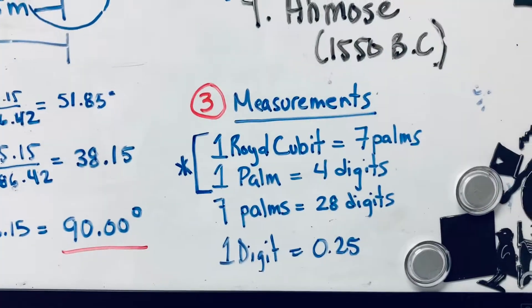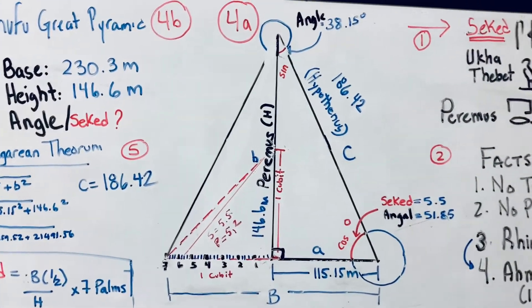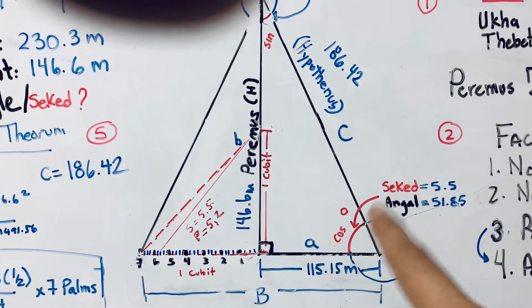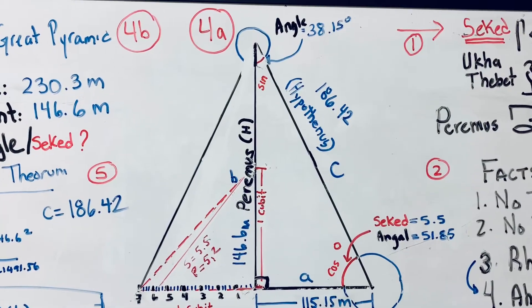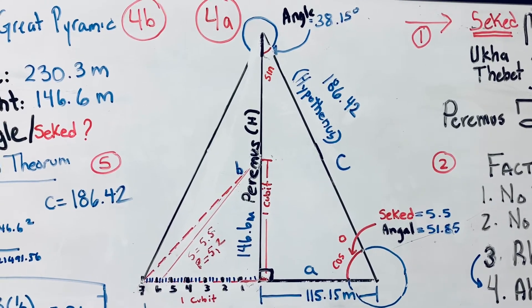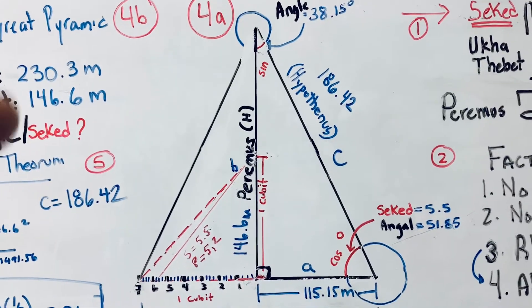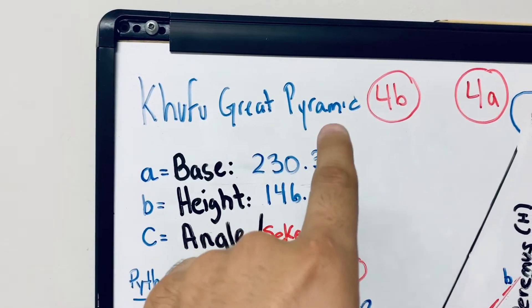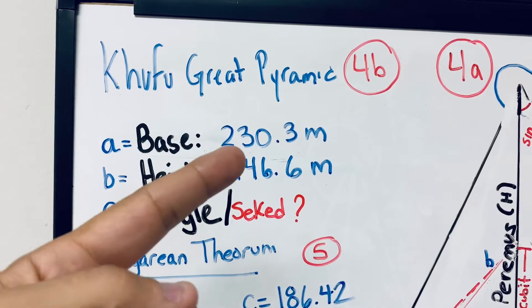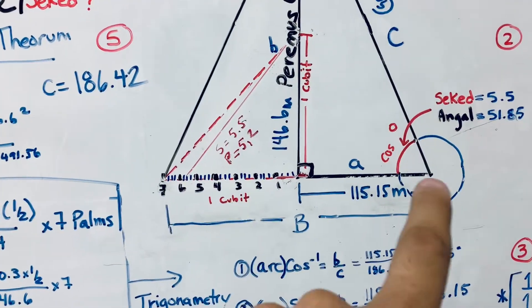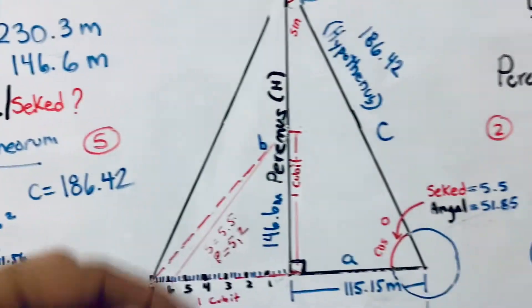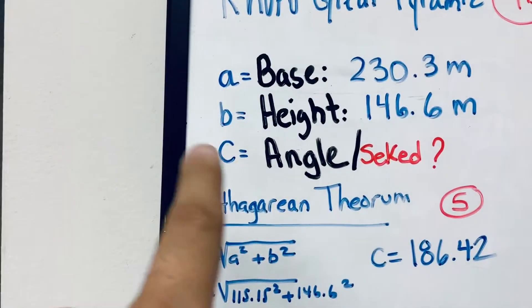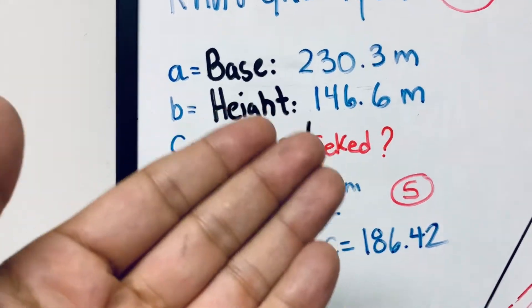Now that we have the measurements, let's proceed. We're going to get to the pyramid itself. The Egyptians would use the base and the height to figure out the seket — what is the angle? We're going to use an example and focus specifically on pyramid geometry. We're going to focus on Khufu's Great Pyramid. It's already been measured: the base is 230.3 meters, and the height is 146.6 meters. So the question is — what is the angle in trigonometry, or seket in ancient Egyptian?